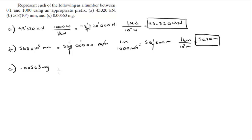If you put it in grams, you know that there's 1000 milligrams in a gram, which means it's going to be 0.00000563 grams. That seems to have made it even worse.